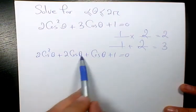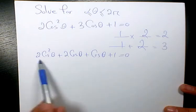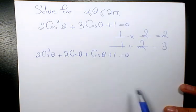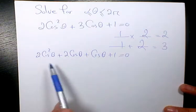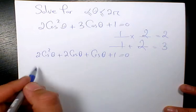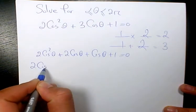Then I factor each group here. The first two terms and the last two terms. The first two terms, the GCF for these two terms is 2 cosine theta.